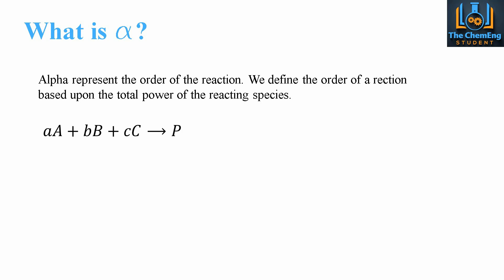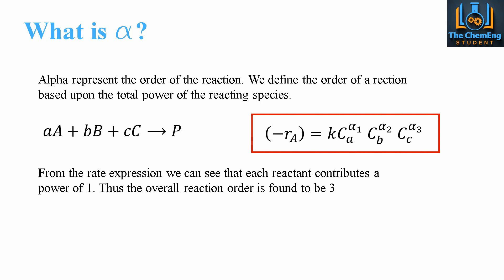When we model different types of reactors, the equations will change depending on the order of the system. We can have zero order, first order, second order, and the modeling equations for, say, batch time are a lot different. So we have to know the order of our system, which is when we use the stoichiometric coefficients.